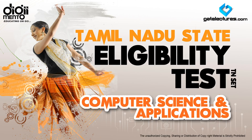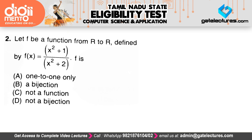Now let us look at question number 2 for the TAN set examination. Question number 2 is from mathematics — specifically from calculus. They say let F be a function from R to R, where R represents the set of real numbers, defined by a given function. The options are: A) one-to-one only, B) bijective, C) not a function, and D) not a bijection.